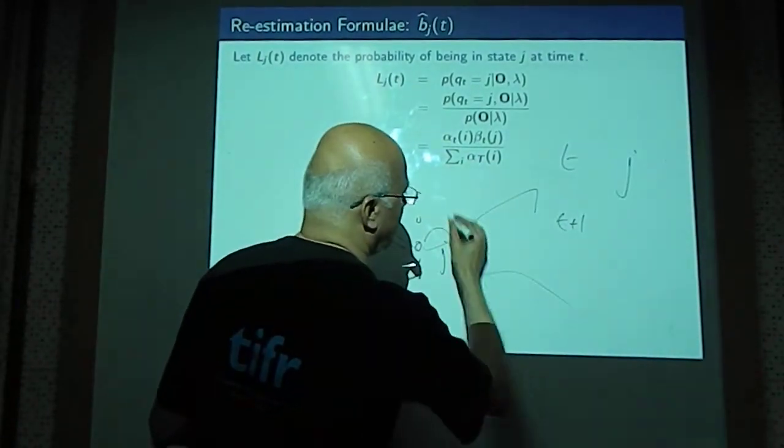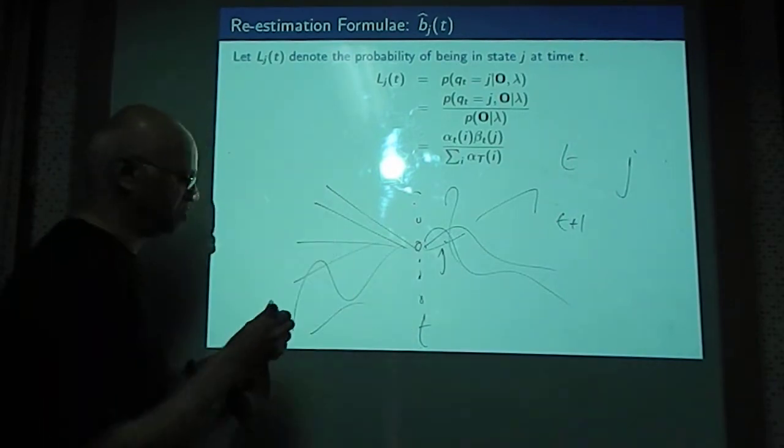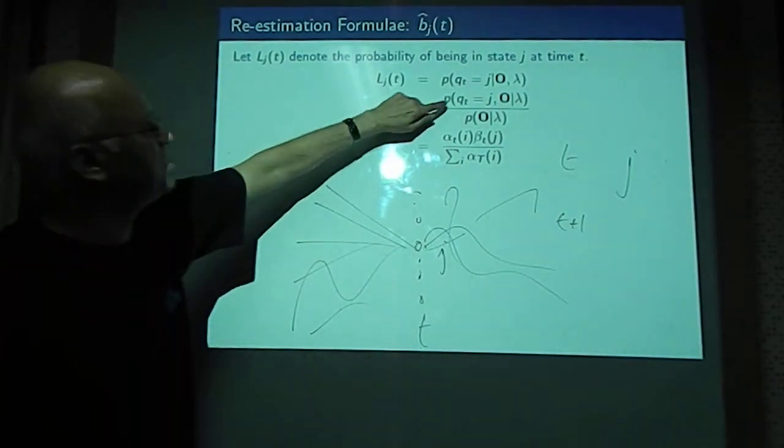That any path, but at time instant t, they have to be in state j. That's what it says.